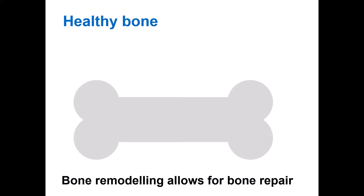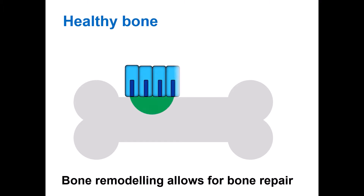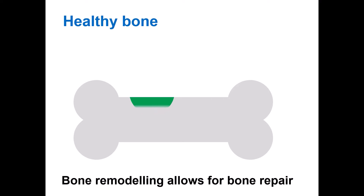Bone remodeling also allows for bone repair. Like any tissue, with time bone can suffer some wear and tear. Damaged bone is removed by the action of osteoclasts, which secrete powerful chemicals such as hydrochloric acid which dissolves mineral. This allows osteoblasts to lay new bone, which then undergoes mineralization and all returns to normal.